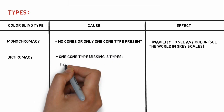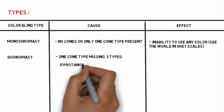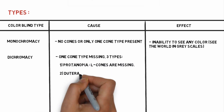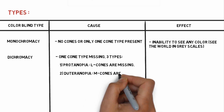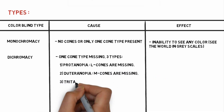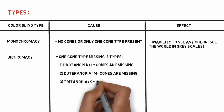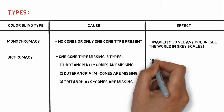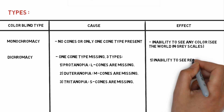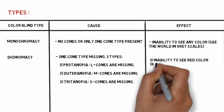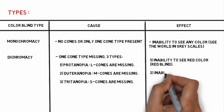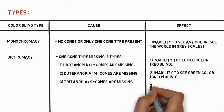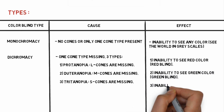The second one is dichromacy, where one cone type is missing. They are further classified into three types. The first is protanopia, in which L cones are missing, leading to inability to see red color — red blindness. The second is deuteranopia, in which M cones are missing, leading to inability to see green color — green blindness.